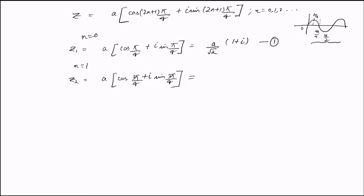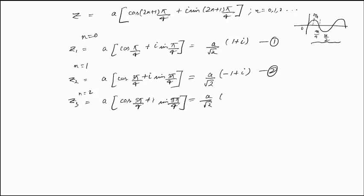Using trigonometric identities, cos(3π/4) = −1/√2, so z₂ = (a/√2)(−1 + i). Similarly, for n = 2, z₃ = a times (cos(5π/4) + i·sin(5π/4)) = (a/√2)(−1 − i). For n = 3, z₄ = a times (cos(7π/4) + i·sin(7π/4)) = (a/√2)(1 − i).